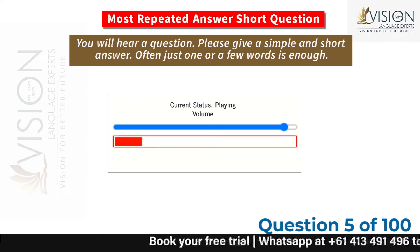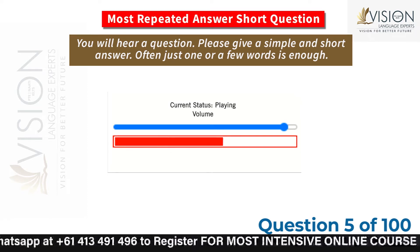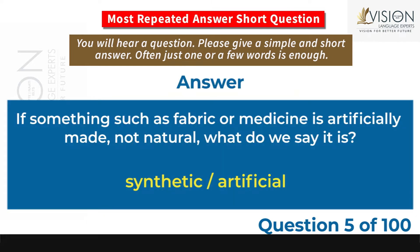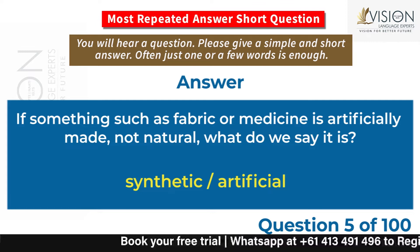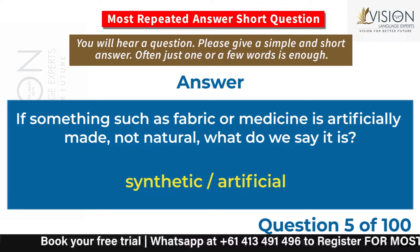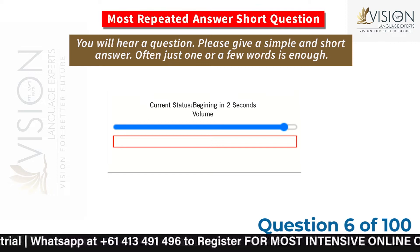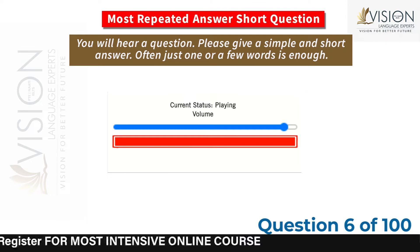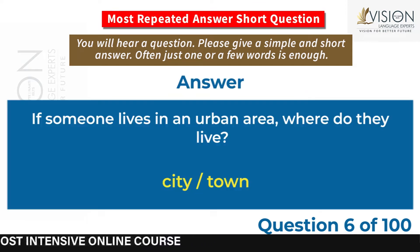If something such as fabric or medicine is artificially made, not natural, what do we say it is? Synthetic, artificial. If someone lives in an urban area, where do they live? City, town.